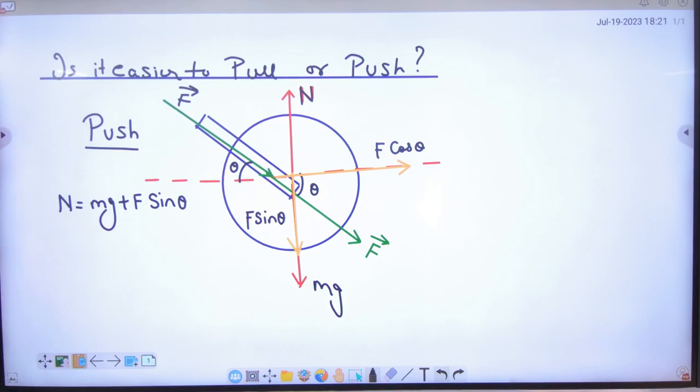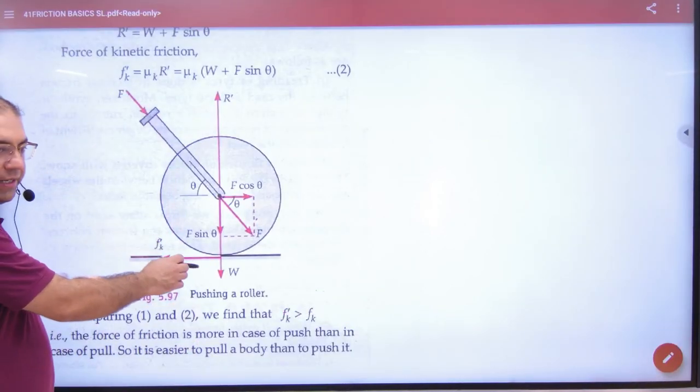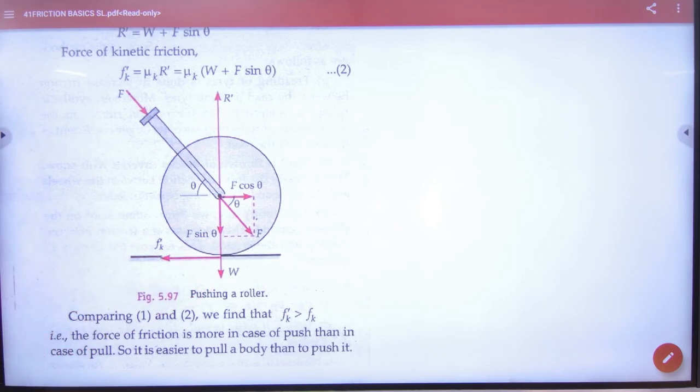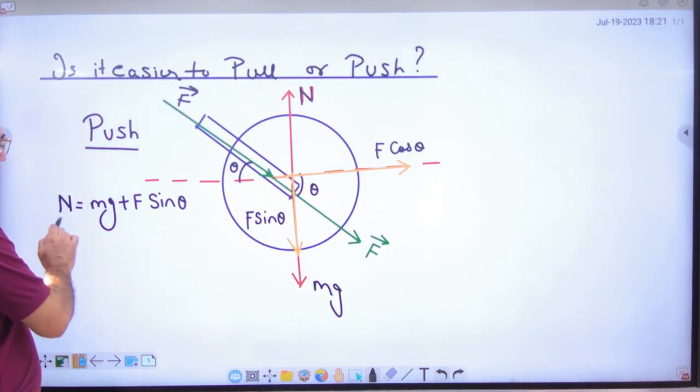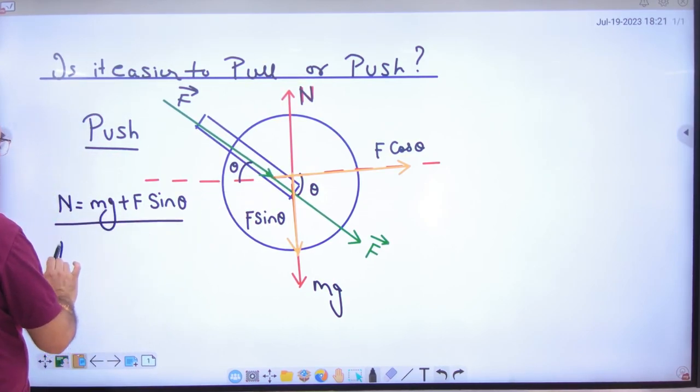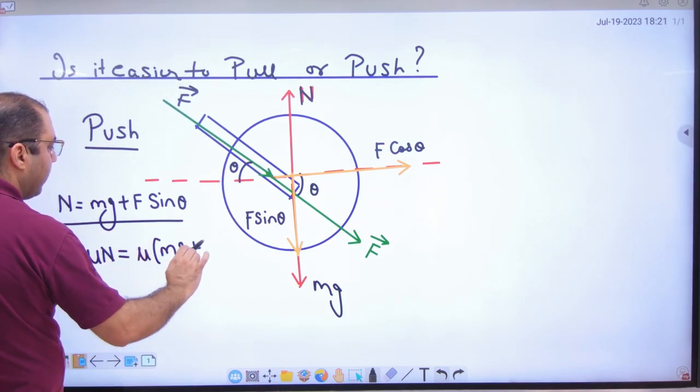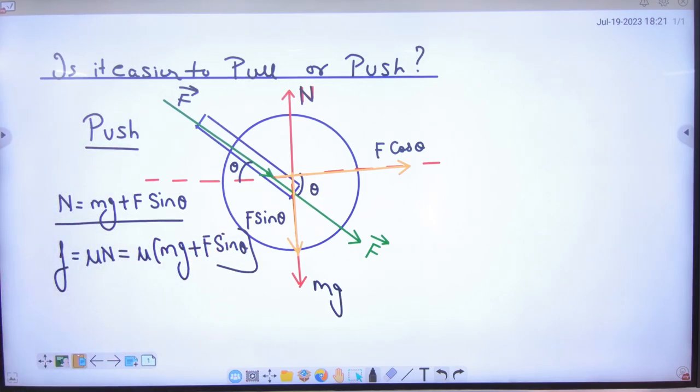Okay, now in this, like this I have drawn the diagram. In this, f cos theta, f sin theta, what is the normal reaction? f sin theta plus w, weight w, mg, this is the same thing. So here it is clear, push case. So in push, this figure, and this is the normal reaction. When you go ahead, force of friction formula: mu times normal reaction, mu times mg plus f sin theta. Okay, clear. Now.